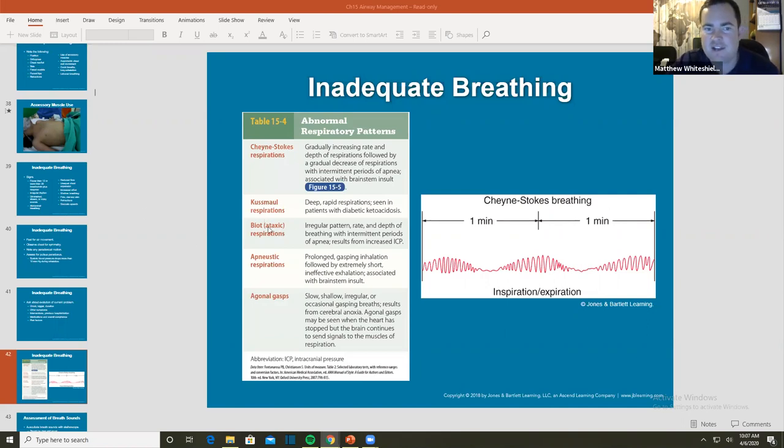Biot's respirations, we talked about that, also known as ataxic, just completely irregular. Also another thing that you're going to see in ICP. Apneustic respirations - prolonged gasping inhalation followed by an extremely short ineffective exhalation, associated with brainstem damage. Prolonged brainstem gasp.